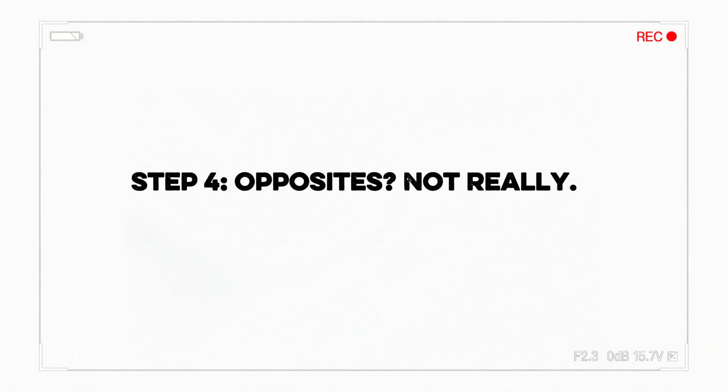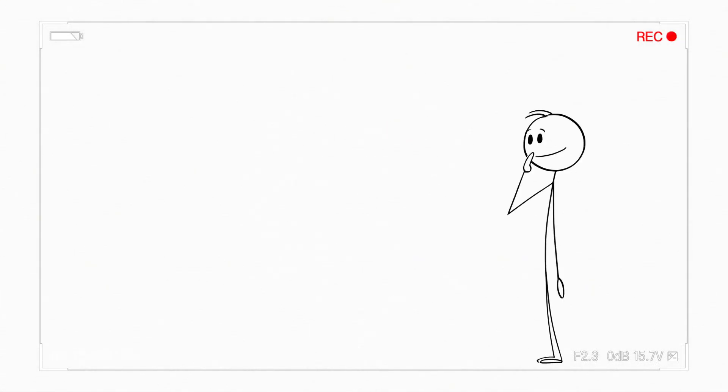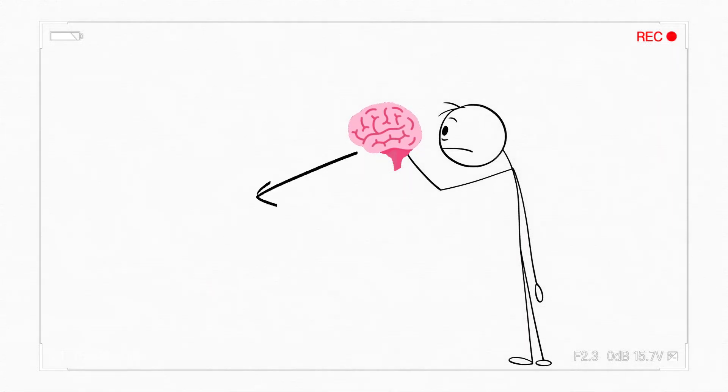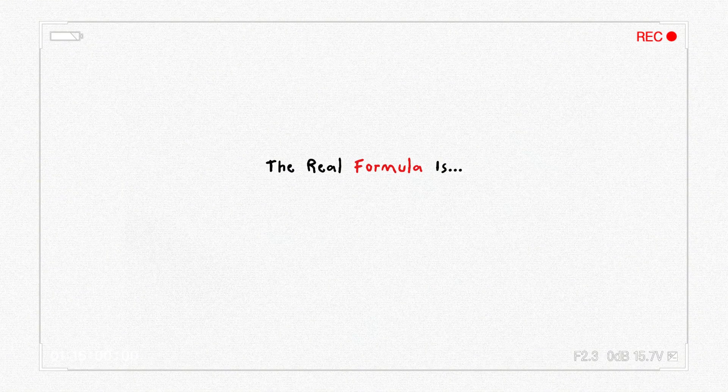Step 4. Opposites. Not really. You've heard opposites attract. Right? Yeah. Not exactly. We're attracted to people who reflect our values or lifestyle. But, your brain also craves novelty. So the real formula is?